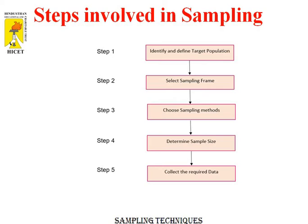For the polls, agencies try to get as many people of diverse backgrounds included in the sample as it would help in predicting the number of seats a political party can win. The last step is to collect the required data. Once the target population, sampling frame, sampling technique, and sampling size have been established, the next step is to collect data from the sample. In opinion polls, agencies generally ask questions such as which political party are they going to vote for, or has the previous party done any work. Based on the answers, agencies try to interpret who the people of the constituency are going to vote for and approximately how many seats a political party is going to win.